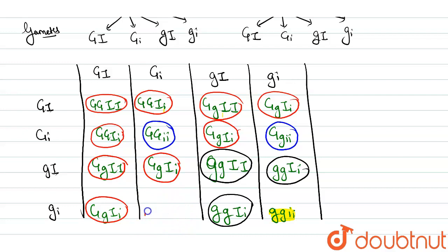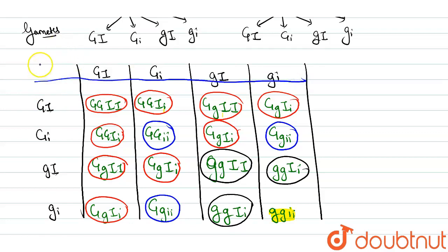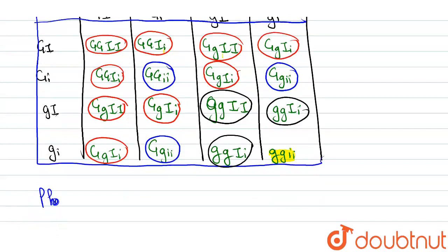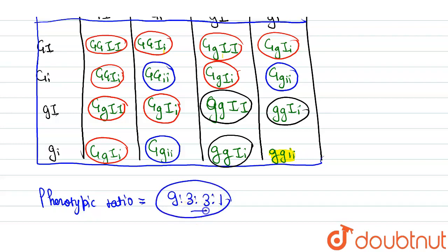To confirm: nine are green and inflated, three are green and constricted, three are yellow and inflated, and one is yellow and constricted. The phenotypic ratio we calculate is 9:3:3:1. This is the phenotypic ratio — the final answer.